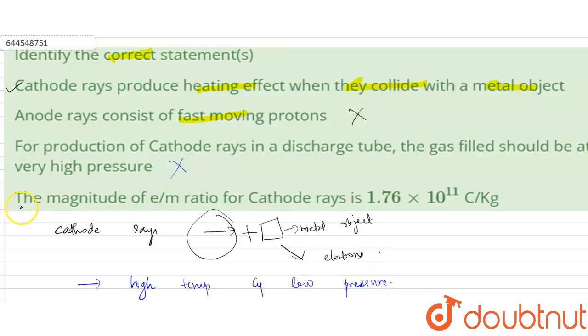The fourth option: the magnitude of e/m ratio for cathode rays is 1.76 × 10¹¹ Coulomb per kilogram. This is true. The value of electron and mass is calculated, that is e/m ratio is 1.76.